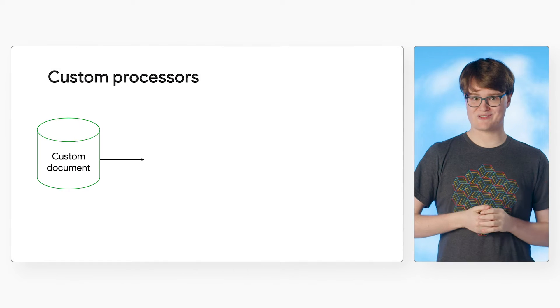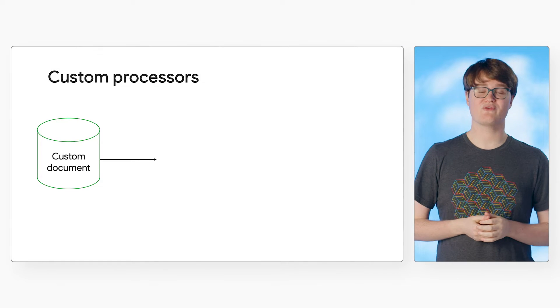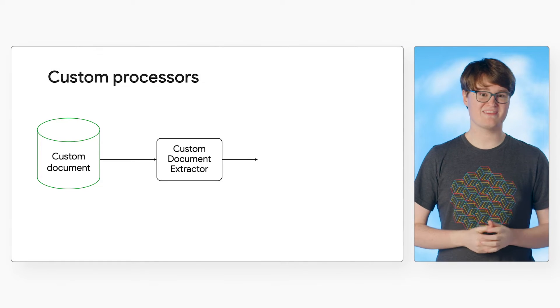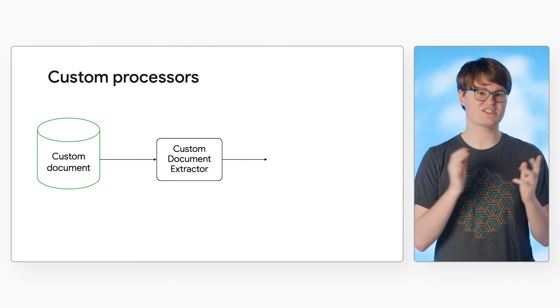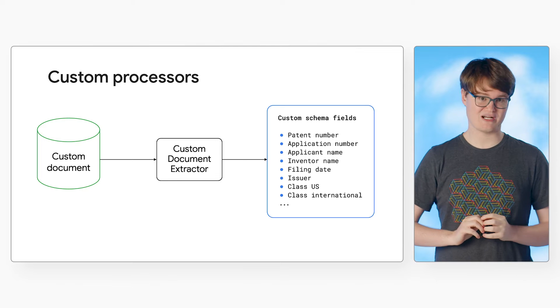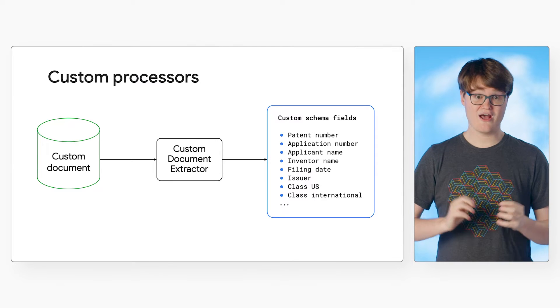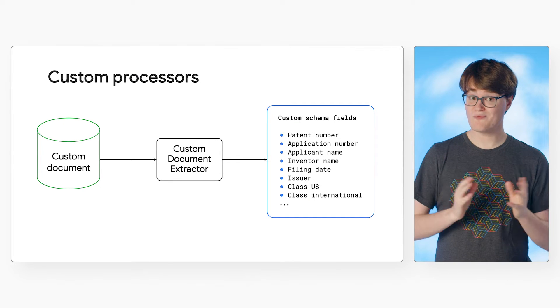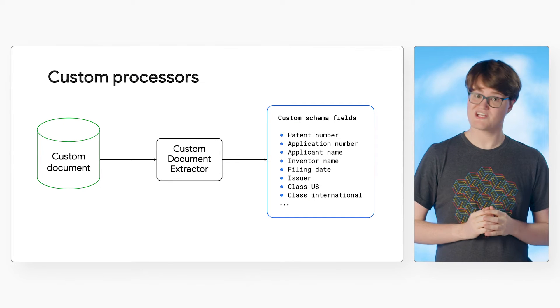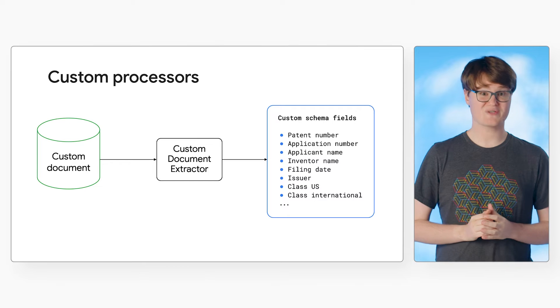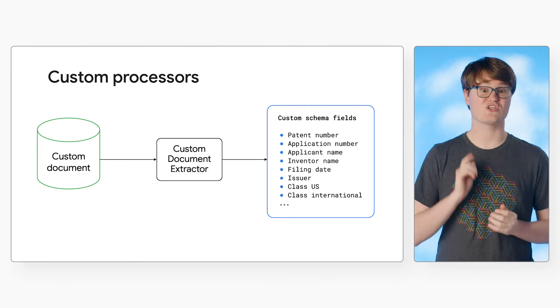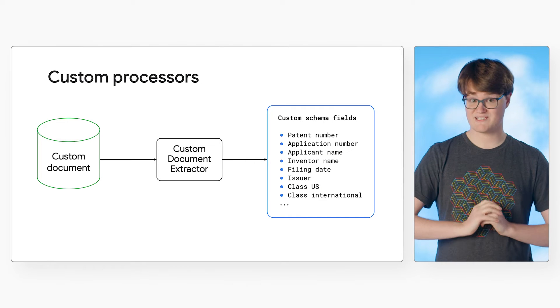Custom processors can be used when you have a type of document that isn't similar to any existing processors. You can create a new processor from scratch that allows you to extract entities using your own document types. Let's look at some examples.